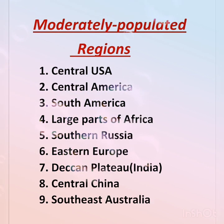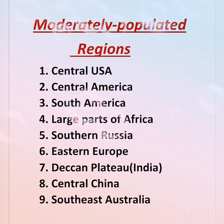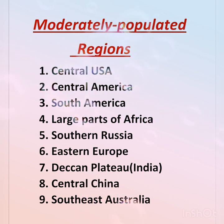Moderately populated regions are interspersed between densely populated and sparsely populated regions. Regions of Central USA, Central America, South America, large parts of Africa, South Russia, Eastern Europe, the Deccan Plateau of India, Central China, and Southeast Australia are all defined as moderately populated regions.